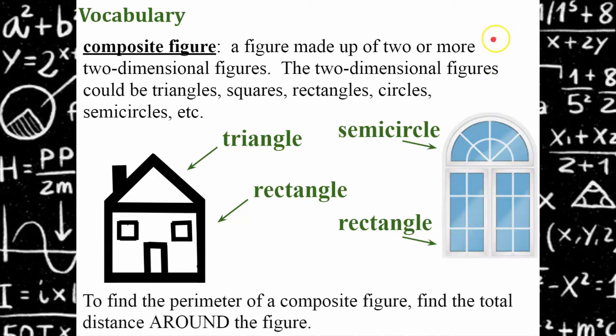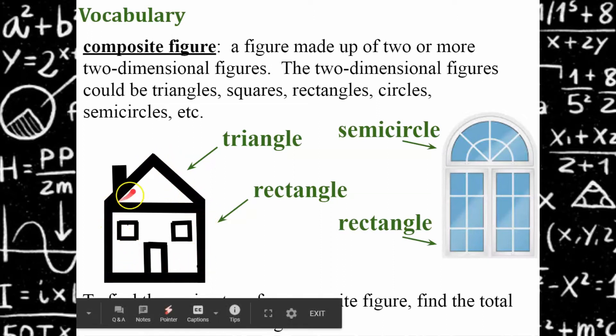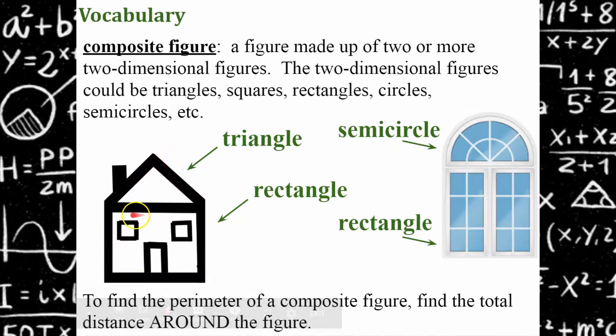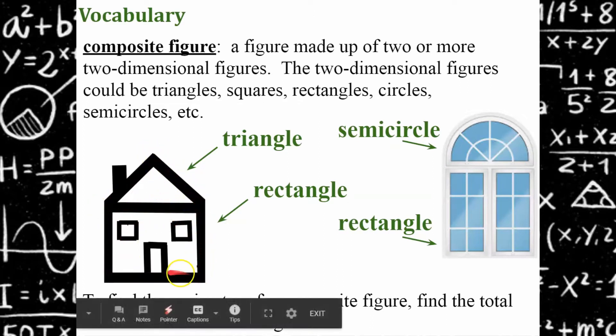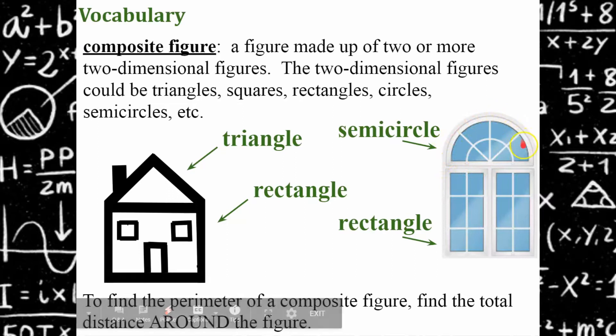To find the perimeter of a composite figure, you're going to find the total distance around the figure. Today we're going to practice picking a starting point and traveling around the figure calculating the perimeter. We are not going to calculate any inside measurements, just the exterior distance around the object. Let's go ahead and do some practice.